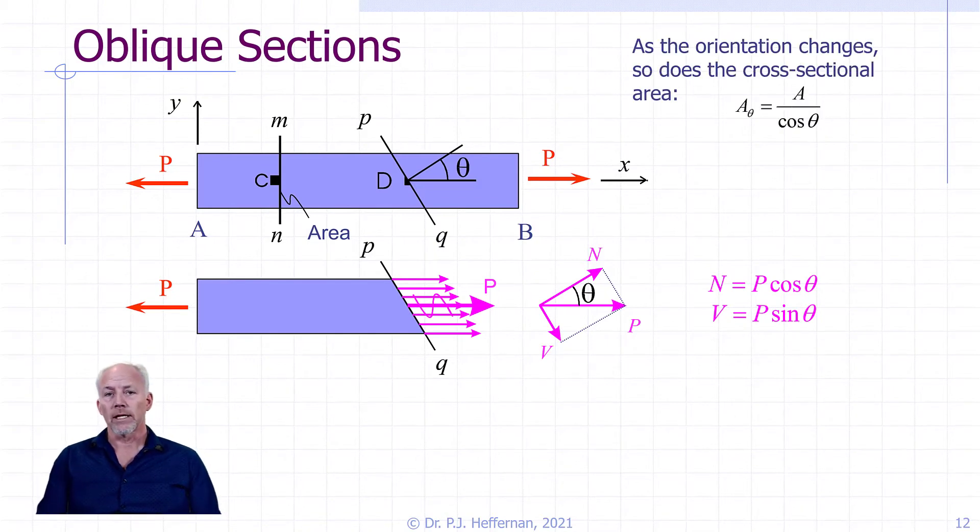And so we can show that it's a fairly straightforward geometric relationship that our new area, A sub theta, is equal to our original area, cross-sectional area, divided by cos theta.